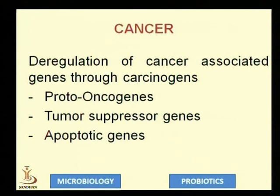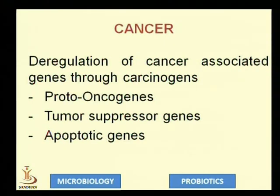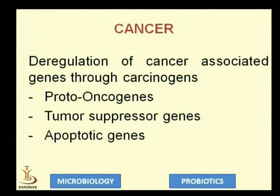Cancer is an uncontrolled cell division process in which normal genes responsible for normal cell division and growth are mutated. There are three different cancer-associated genes: proto-oncogenes, tumor suppressor genes, and apoptotic genes. Proto-oncogenes produce proteins responsible for normal growth and cell division, but upon mutation, a proto-oncogene is converted into an oncogene, which permanently activates the cell division process, resulting in uncontrolled cell division.